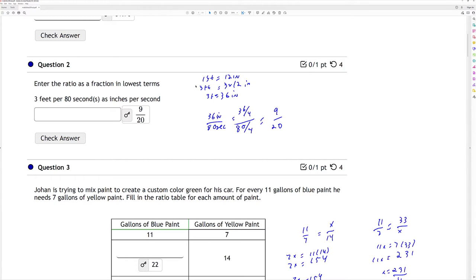Enter the ratio as a fraction in lowest terms. So I have here 3 feet per 80 seconds. So I have to convert...